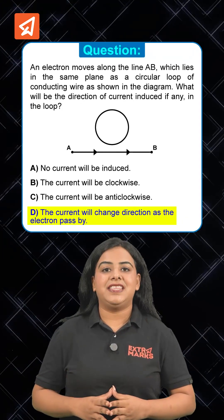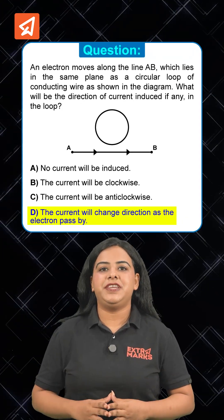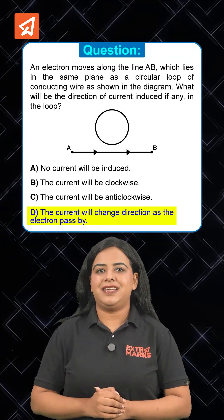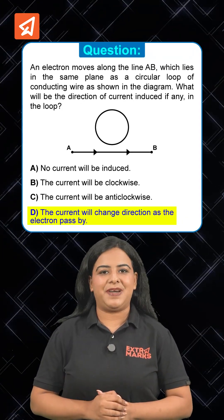Thus, we can say that the direction of induced current changes as the electron passes by the loop.